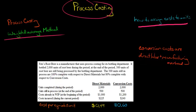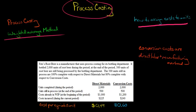Think about it like this: they've poured all the root beer in the bottle, so those 500 units that are still left are 100% complete for materials, but there's other work that needs to be done — some direct labor, some overhead. So the question is, how do we assign costs? Because we're going to have costs that were already in work in process at the beginning of the period, and then we have costs that are incurred during the period.